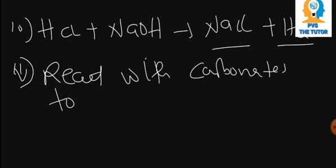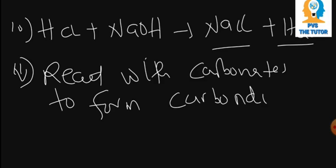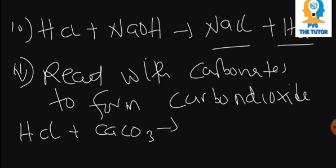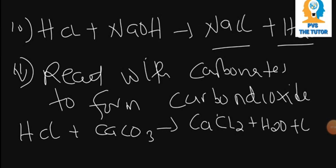Acids react with carbonates to form carbon dioxide. For example, hydrochloric acid plus calcium carbonate will form calcium chloride, water, and carbon dioxide. These are the main products when an acid reacts with a carbonate. In some experiments you will be required to do an identity test for carbon dioxide to prove that the gas produced is actually carbon dioxide.